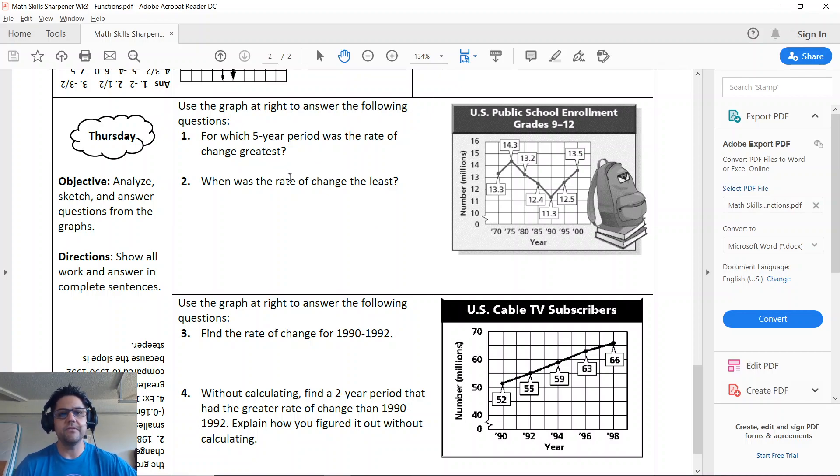Remember, rate of change is just a fancy way of talking about the slope. So you might have to identify the slopes for individual portions. You can go off of looks to help you start but not finalize it. Remember, if it looks steeper, that means it's an improper fraction. So that would definitely be a rate of change greater.